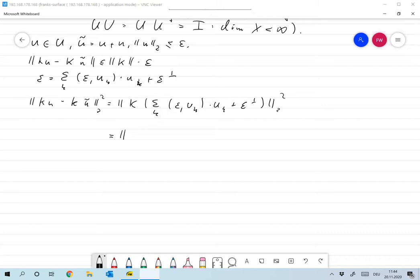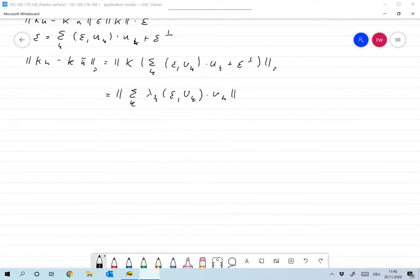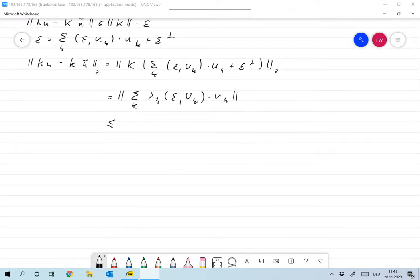First of all, K epsilon perp goes away because epsilon perp is in the null space of K. So we already notice if we make errors that are actually in the null space of K, it doesn't have any effect. So that's great. What is left is we have something like sum over all k scalar product of epsilon and uk uk, but uk is an eigenvector of K with respect to lambda k. So this is nothing but lambda k times uk.